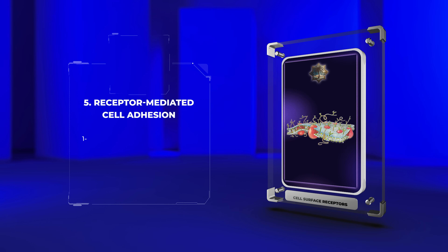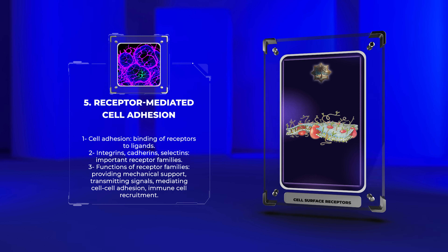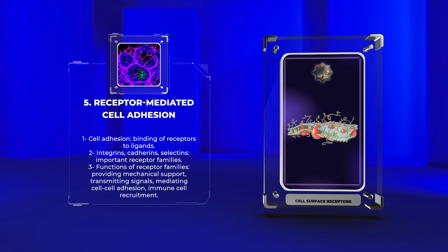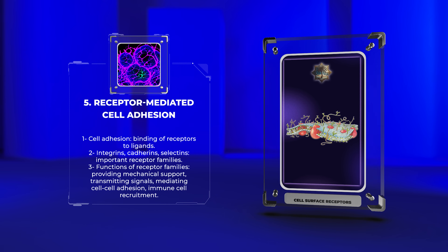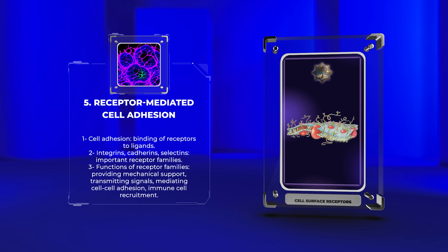Cell adhesion is a complex process involving the binding of receptors to ligands, allowing cells to interact and adhere to each other or the extracellular matrix. Integrins, cadherins, and selectins are important receptor families involved in this process. Their functions range from providing mechanical support and transmitting signals to mediating cell-cell adhesion and immune cell recruitment.